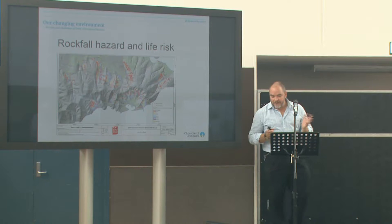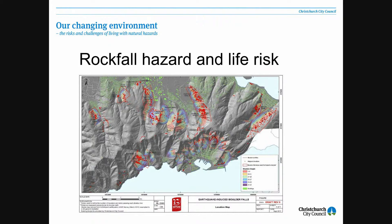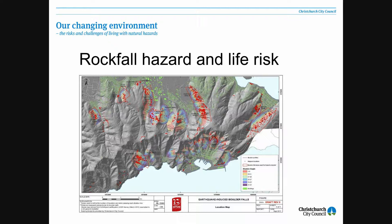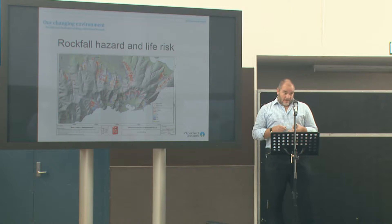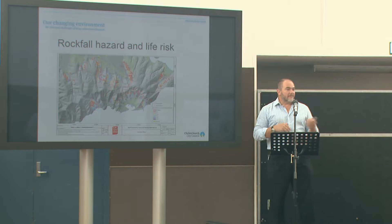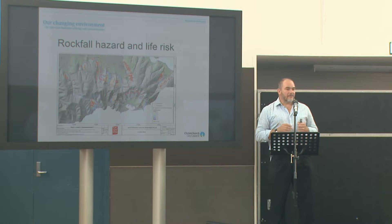The first slide is an overview of the Port Hills — you can hopefully see Lyttelton Harbour down at the bottom. What should really strike you is the large number of red dots. Those red dots were individual boulders that had detached from their source up in the Port Hills and upper slopes, rolled down into the lower slopes, and many rolled through existing communities. The Port Hills Geotech Group's job was to go out and map these boulders, their size, and how far down the slope they got.